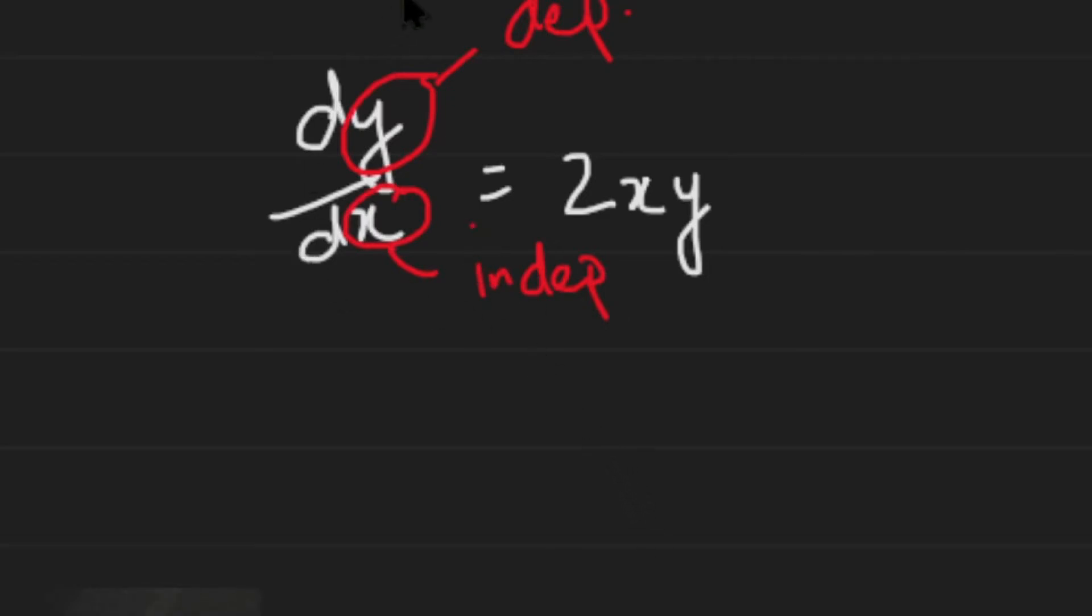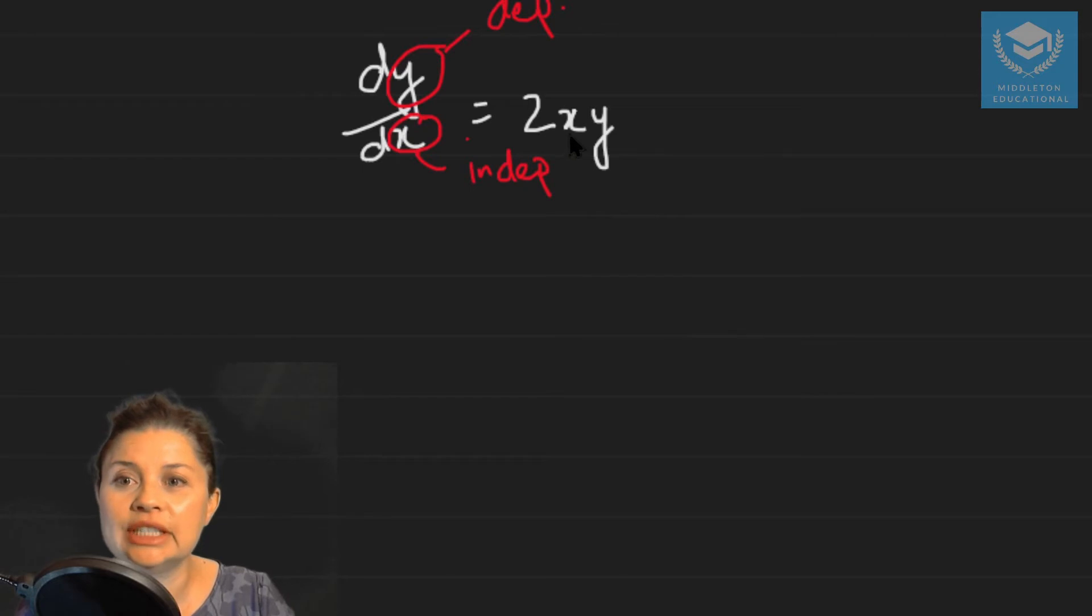Then we cover up the derivative and then look at the rest of the equation. And in the rest of the equation we see that we have both our dependent and our independent variables. And that means that you can't use dy/dx integration for this particular example.